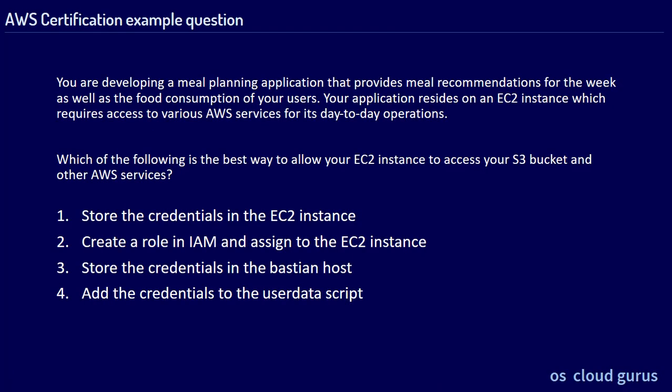Let's have a look at a typical question. You're developing a meal planning application that provides meal recommendations for the week as well as food consumption tracking for your users. Your application resides on an EC2 instance which requires access to various AWS services for its day-to-day operations. Which of the following is the best way to allow your EC2 instances to access your S3 bucket and other AWS services? The correct answer is number two: create a role in IAM and assign it to the EC2 instance. You'll probably get this or a similar question in the exam.